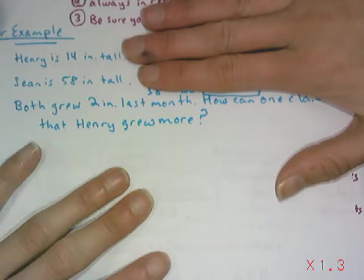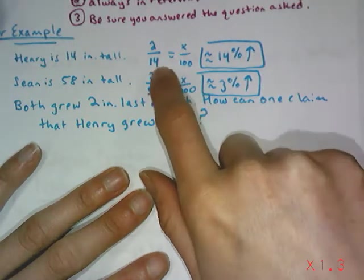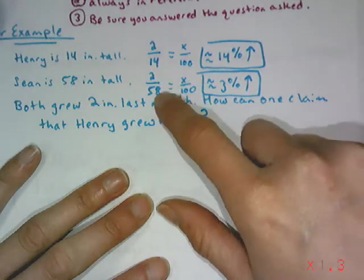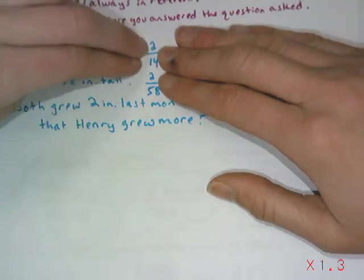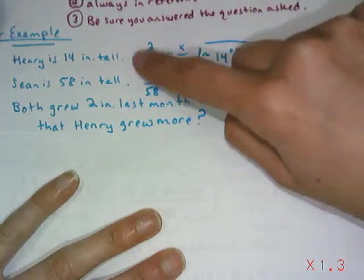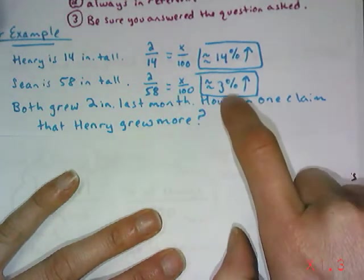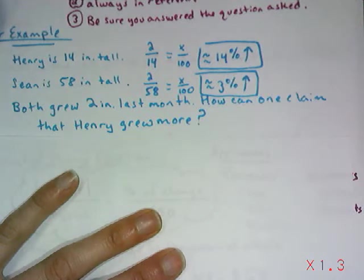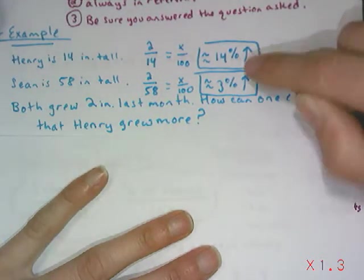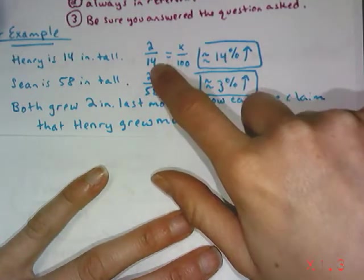It depends on how you look at it. This is where we're going with percent of change. If you look at the amount of change, the two inches, in relation to Henry who started off pretty small at 14 inches, compared to his older brother who started off 58 inches, two fourteenths is a much bigger fraction than two fifty-eighths. Two is 14% of 14, but two is only 3% of 58. If you're looking at how much these boys grew as a percentage of how they started, Henry grew a lot more than Sean because he started off so much smaller.